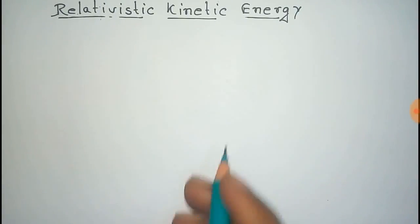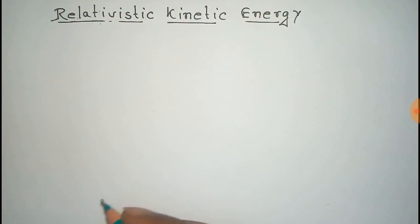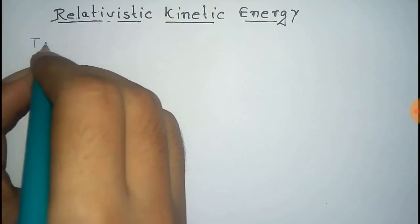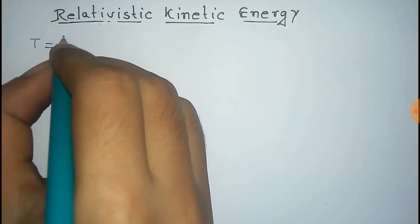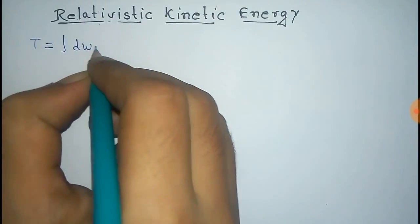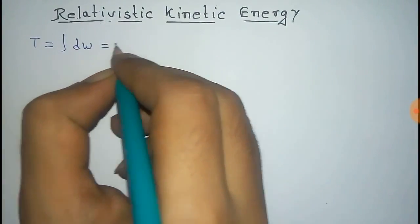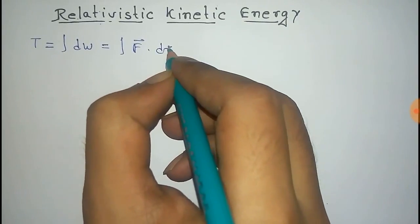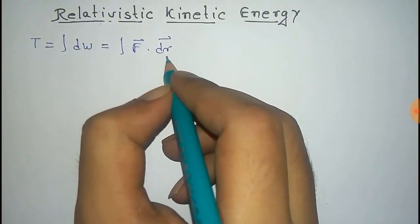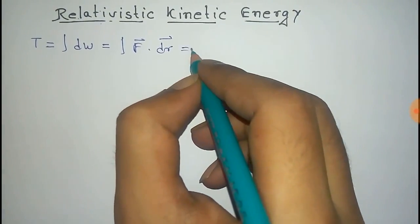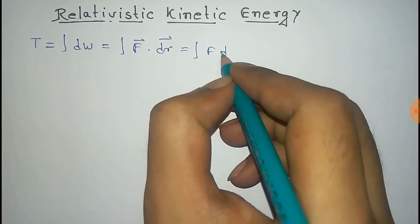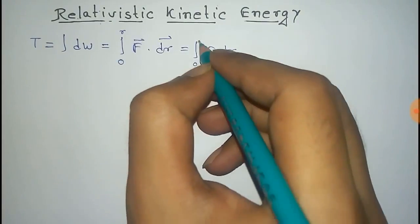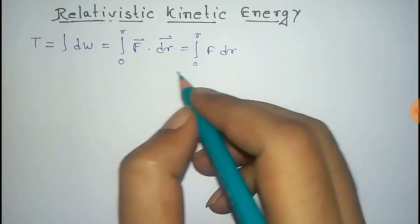We have to find the relation of relativistic kinetic energy. So relativistic kinetic energy T is equal to the integral of dW, which equals the integral of F dot dr. Since force and displacement are in the same direction, it becomes F into dr, with the limit 0 to R.